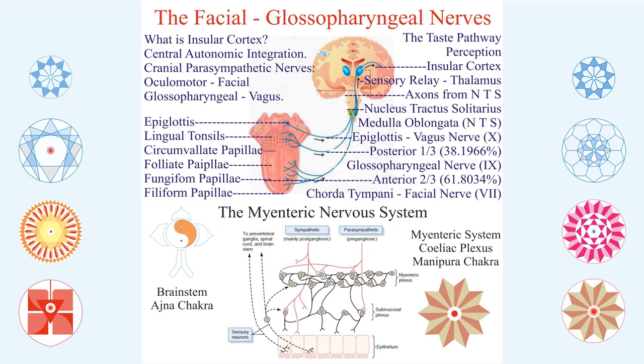Now let us go to the facial and glossopharyngeal. The anterior 61.803% of the tongue is innervated by the facial nerve's sensory component, which brings information to the nucleus tractus solitarius in the brainstem and then to the thalamus and parietal cortex. The posterior 38.196% — about one-third — is innervated by the glossopharyngeal nerve. The anterior half is for good taste but the posterior tongue detects bitter taste. Anything bitter could be dangerous — like cyanide poisoning — so a reflex of the glossopharyngeal nerve can immediately produce vomiting to expel whatever has been taken.